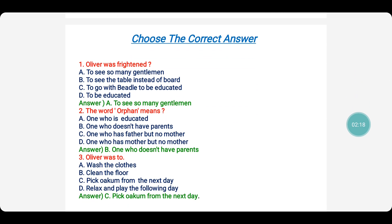Firstly, the multiple choice questions. Choose the correct answer. Oliver was frightened to see so many gentlemen, to see the table instead of board, to go with beadle to be educated, to be educated. Now look children, what made Oliver get scared?